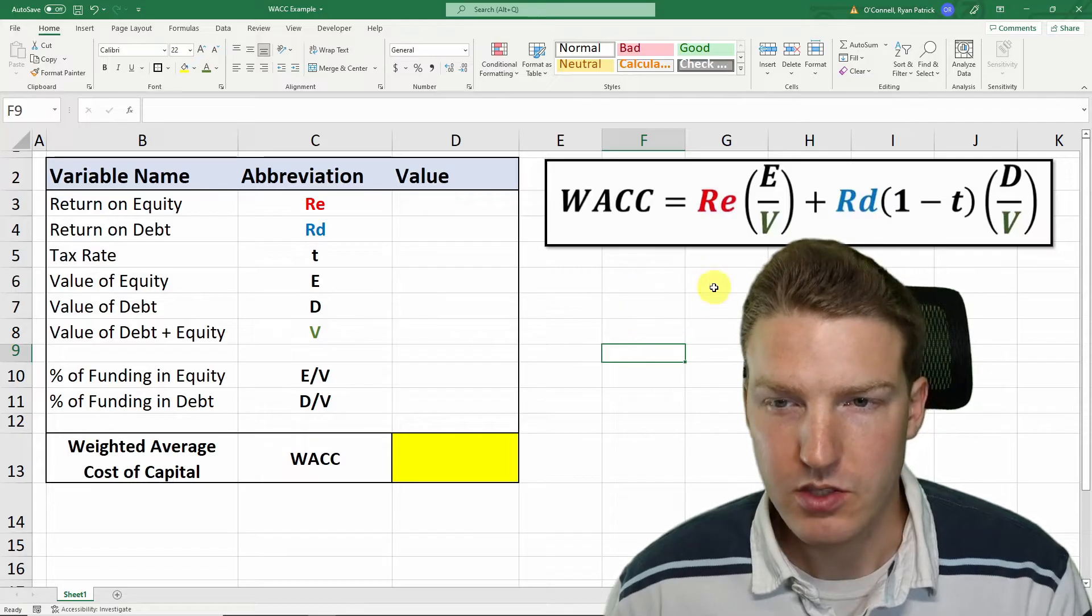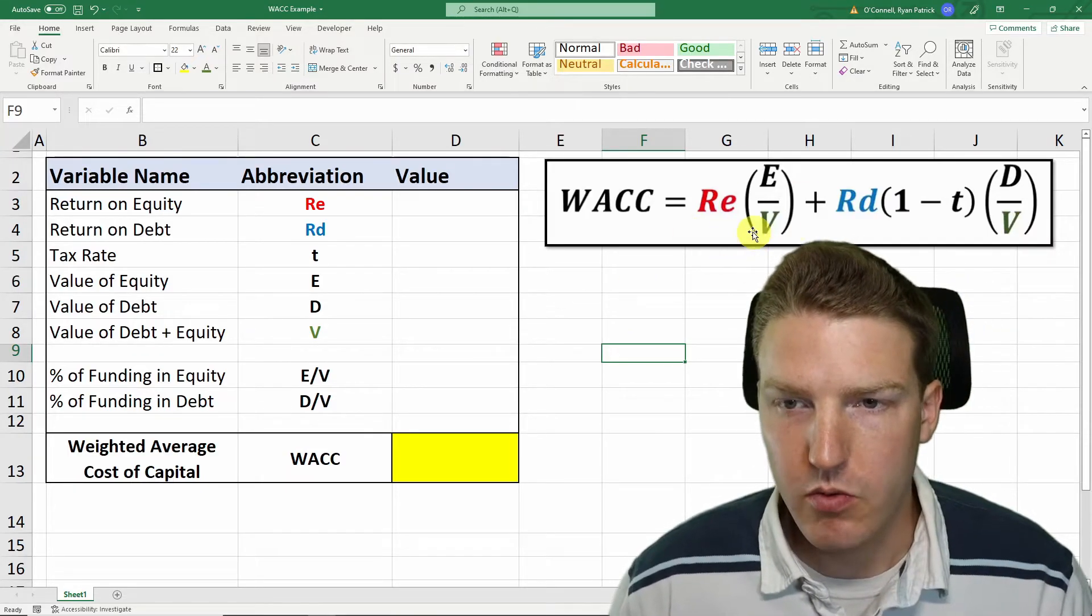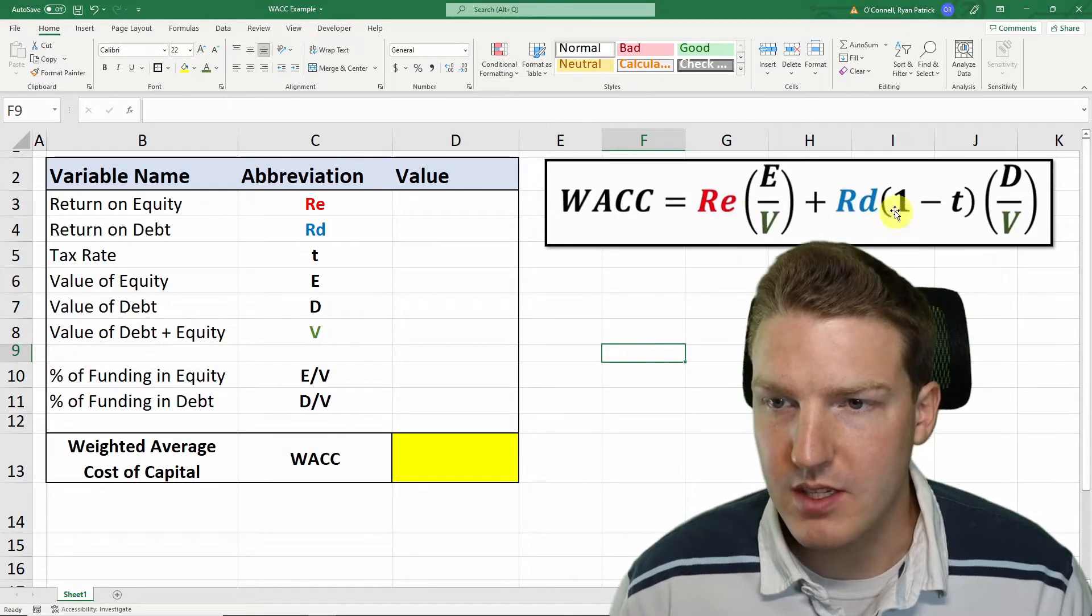You can think of this formula in two components. This one right here is the equity side, and this over here is the debt side.